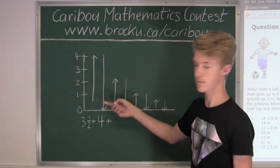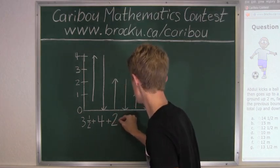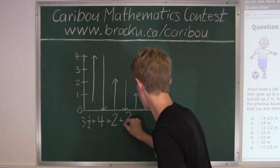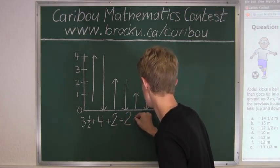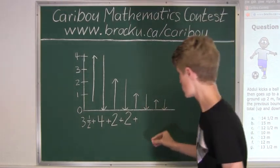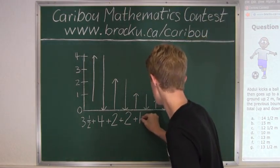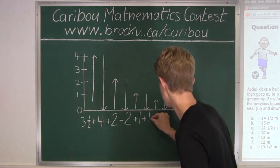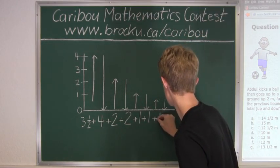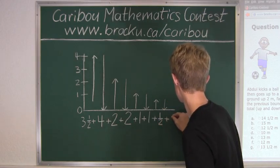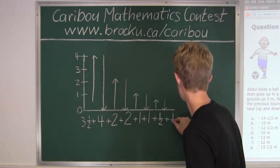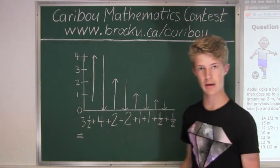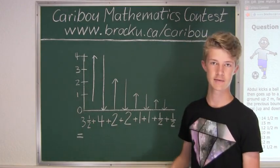Then from 0 to 2 is 2. And then we have down 2. Then we have up 1 and down 1. And then we have up half and down half. Okay, so to make this easier, we will add the whole numbers and then the halves to that.